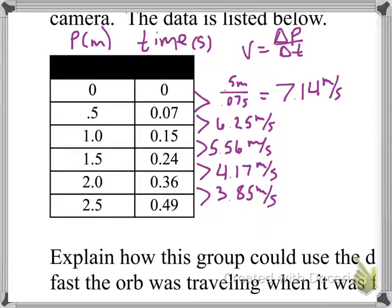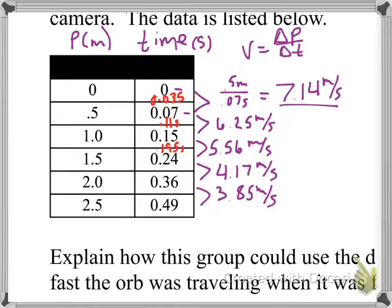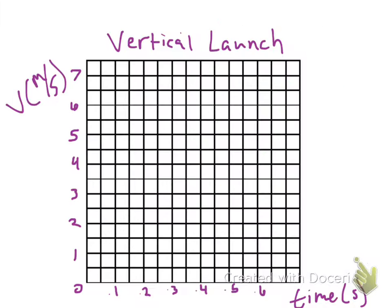The tricky part about plotting this — where a number of you got caught last time — is that each speed is not associated with the start or end time of the interval, but the midpoint. So the first value is plotted at 0.035 seconds, the next at 0.11 seconds, then 0.195 seconds, then 0.3 seconds, and 0.425 seconds. These are the midpoints of those time intervals.